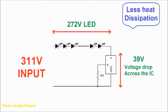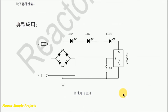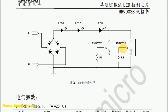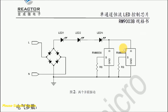However, this IC has a protection system to protect itself from high temperature. The maximum load for this IC is 5 watts, but you can connect two ICs in parallel to handle more power, as mentioned in the datasheet.